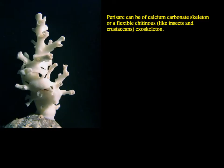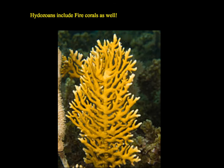Sometimes the perisarc, that outer coating, can be made of calcium carbonate, as found in this one here, or it can be a more flexible, chitinous exoskeleton like you find in insects and crustaceans. This is the fire coral — some people have seen those. They are actually hydrozoans and not true corals, and they have just a mild enough sting to cause a little irritation if you touch one with bare skin.